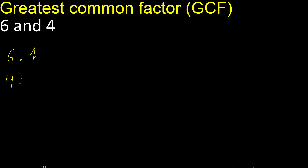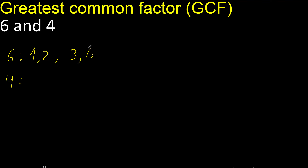Factors — always start with 1. 6 divided by 1 is 6. Next, divided by 2 is 3. Next is 3. 3 is here.